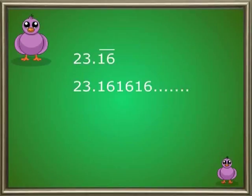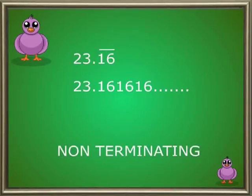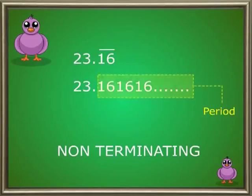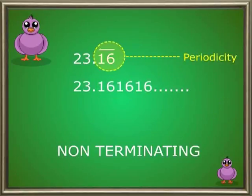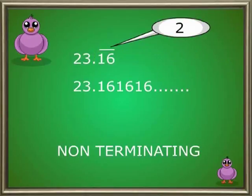Do you see a difference in this decimal number? These types of decimal numbers are known as non-terminating decimal numbers, as well as recurring numbers. This type of numbers are rational numbers, and in this type of decimal numbers, the repeating structure is known as the period. In this case, 16 is the period, and the number of digits in the period is known as the periodicity of the decimal. In this case, 16 is a 2-digit number, so the periodicity of the decimal is 2. These types of decimal numbers also fall in the category of rational numbers.